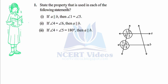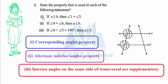The question asks us to state the property used in each of the following statements. We have to find the properties that govern these statements using the given figure. First, it is given that line a is parallel to line b. We can see they are lines because they are marked with arrows — a line is non-ending in either direction.